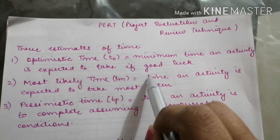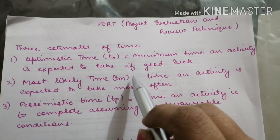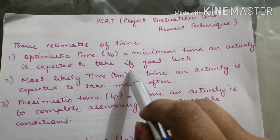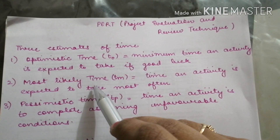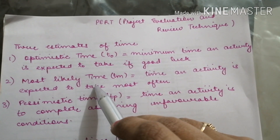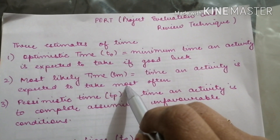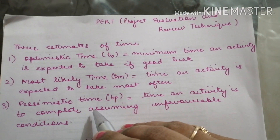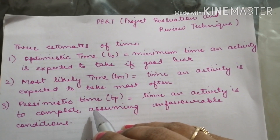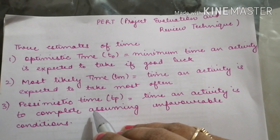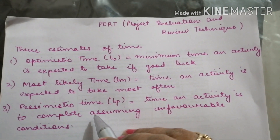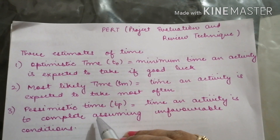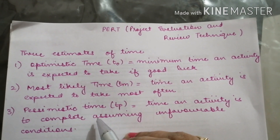Optimistic time is the minimum time an activity is expected to take if everything goes positively. Most likely time is the general time required by every activity to complete. Pessimistic time is the maximum time a particular activity is going to take in case of any unfavorable condition.